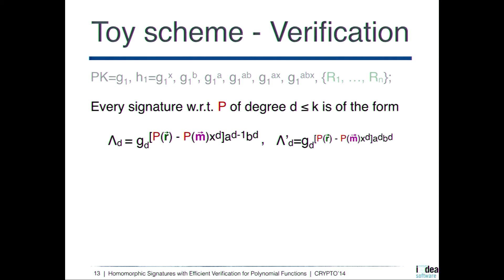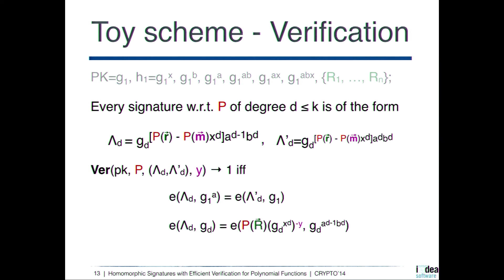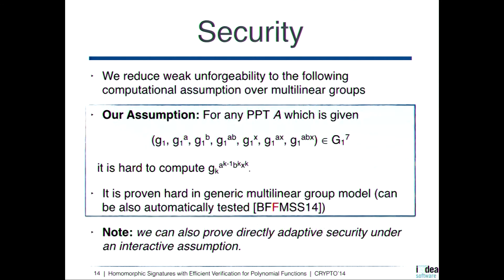There is also a twin version of this scheme with an additional exponent A. If signatures have this form, we can use the multilinear maps to check this during verification. For verification, we have to compute the polynomial over the R values — this is important for understanding how we achieve efficient verification.